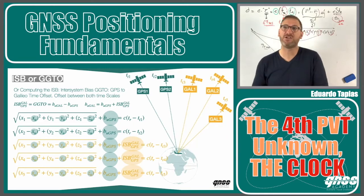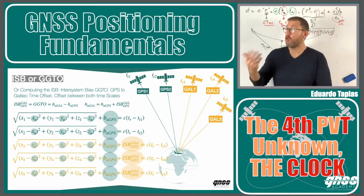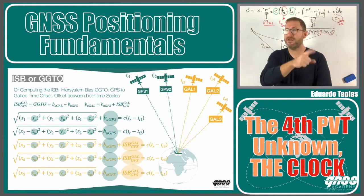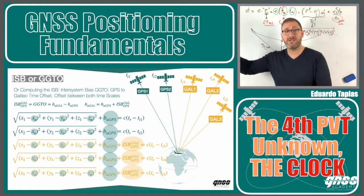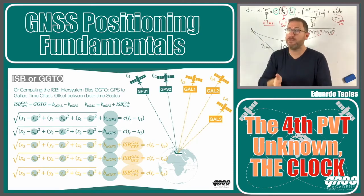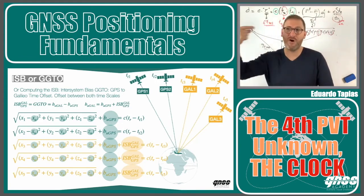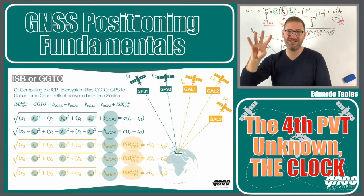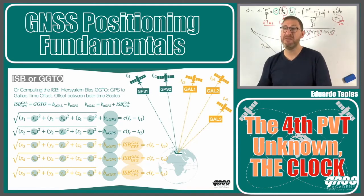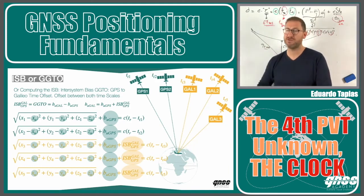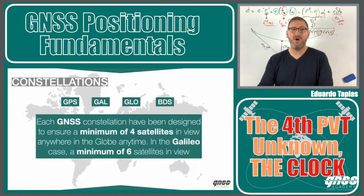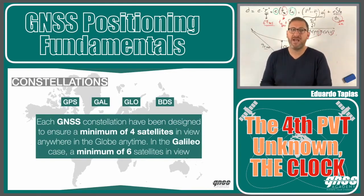In my solution, I also estimate these inter-system offsets. If you have three or four constellations, you need to add the offset between the reference time scale and each new constellation's time scale. A third constellation means I need a sixth satellite; four constellations require a minimum of seven satellites. Each additional constellation introduces another unknown — the offset between the new constellation and the reference constellation. Each GNSS constellation must therefore be designed to have at least four satellites in view at any time, everywhere.